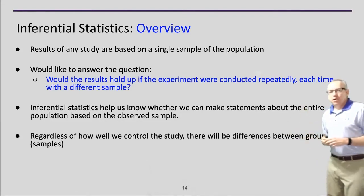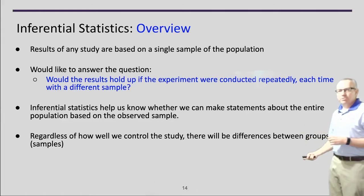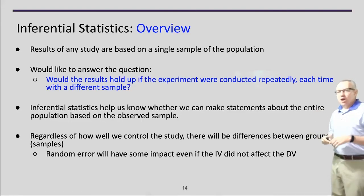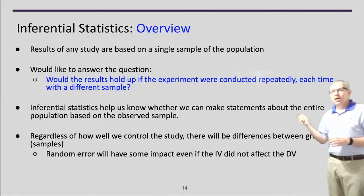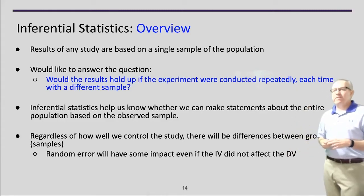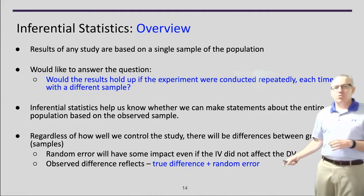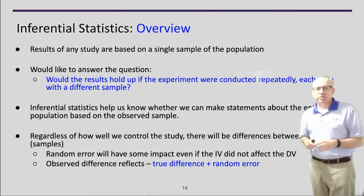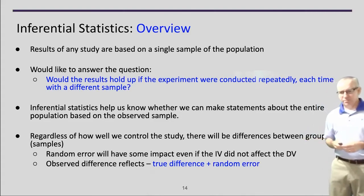Regardless of how well we plan and control our study, there are going to be differences between groups because we're dealing with people — there's going to be some random error. There are things about participants I didn't know to measure. So what I see in a study is really a combination of the true difference versus some sort of random error. I want to understand how strong that random error is and how much it affects my study.